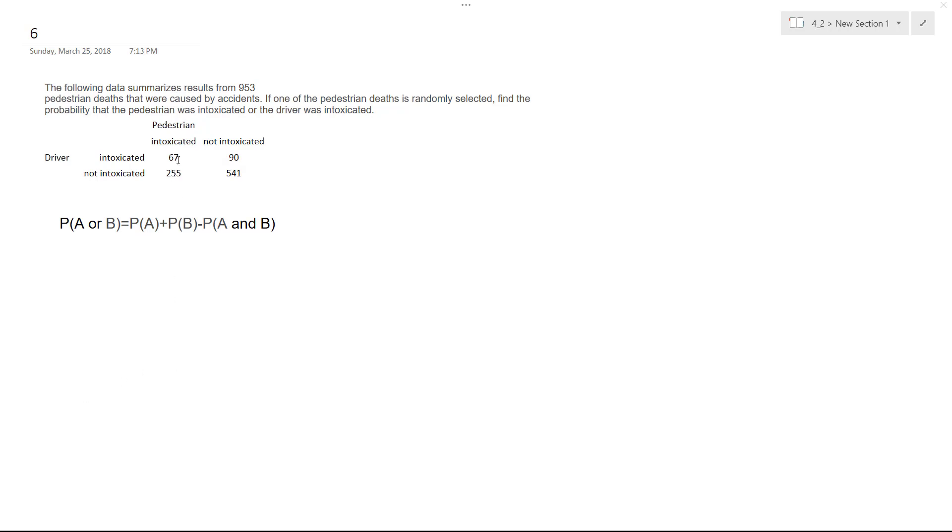So what that means is some of these kind of overlap where it says they're both intoxicated. So like the top left one, some of that can bleed over into the OR cases. So in order to solve for this, where we figure out where it's just either OR, we got the following equation here.